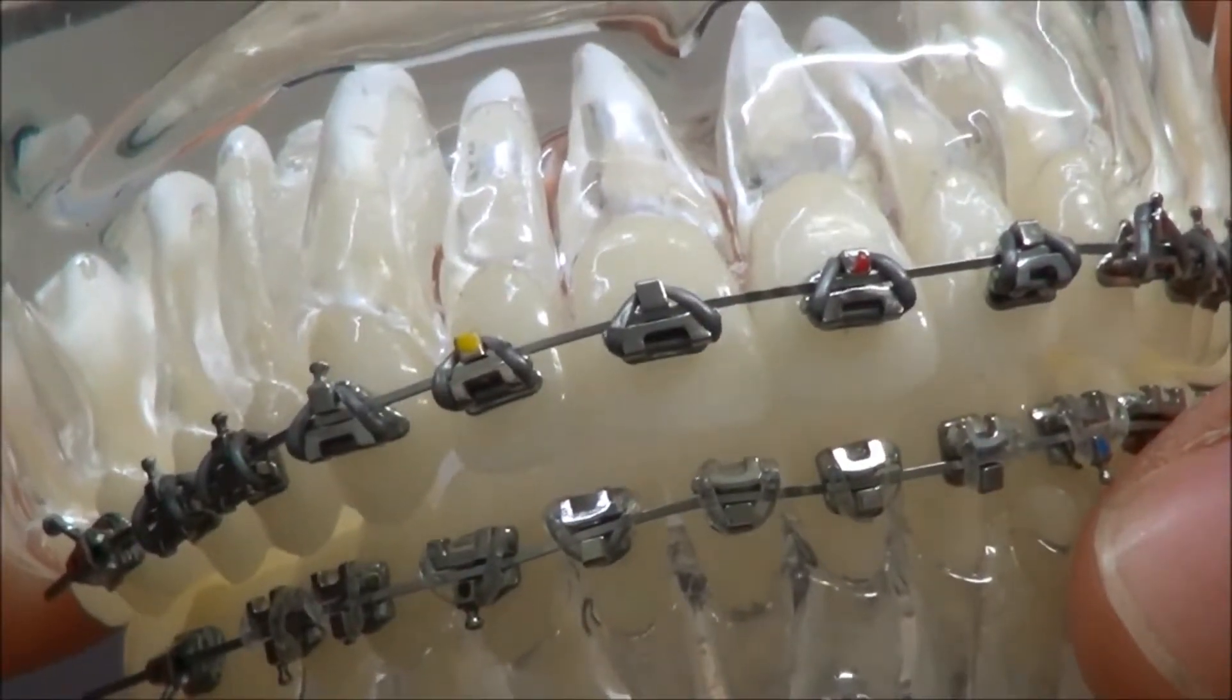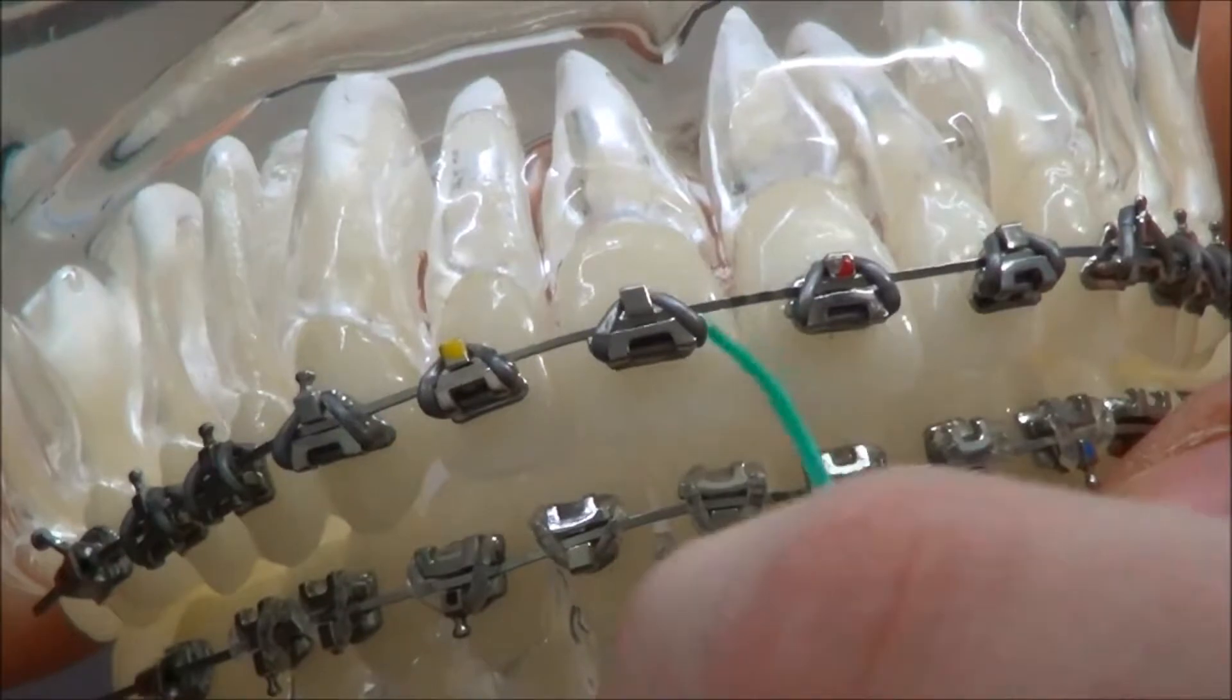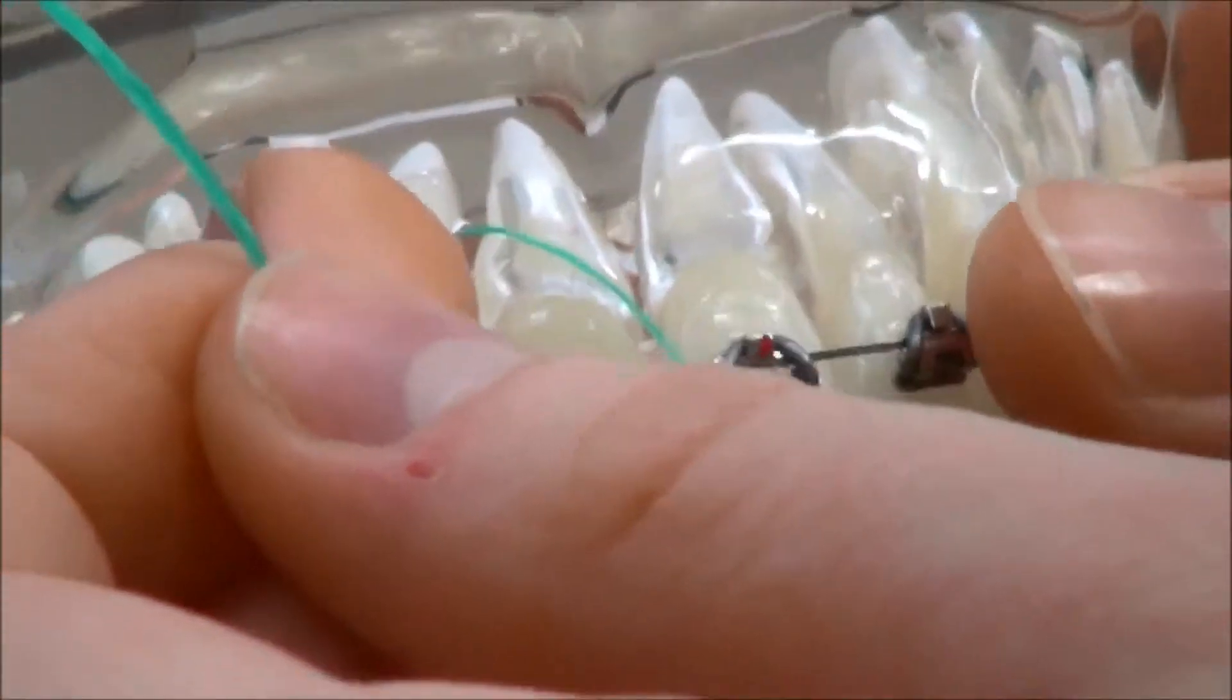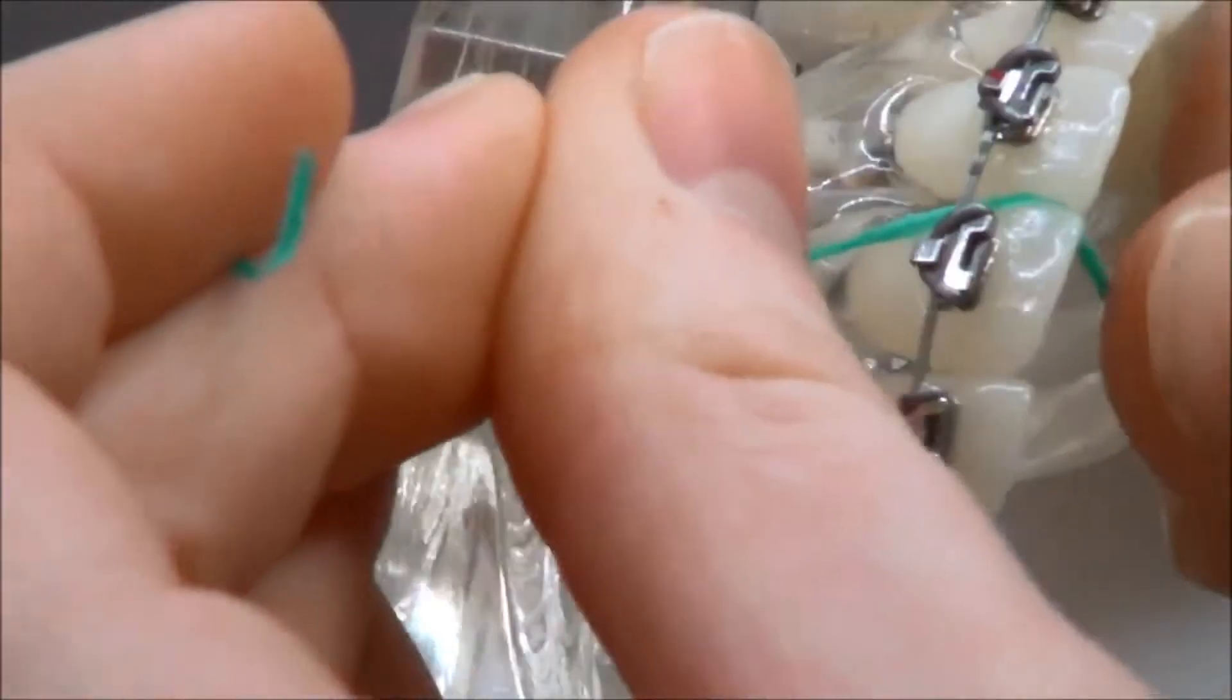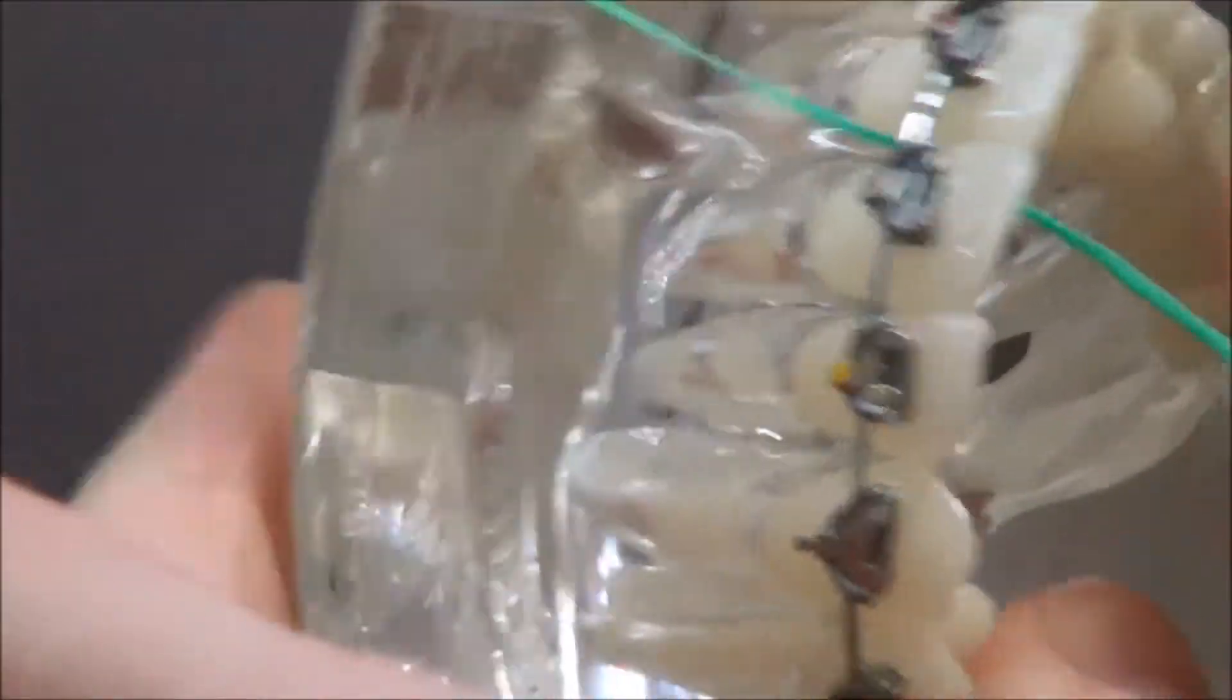To use floss, you're going to have to thread it underneath the wire. Pop it underneath like this, grab the end and then you'll be able to floss your teeth like you would normally, and then pull it out.